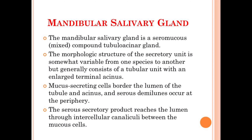Another characteristic of the mandibular salivary gland is that the lumen of the tubule and acinus is bordered by mucus-secreting cells, and the presence of serous demilunes can be marked at the periphery of these structures. The serous secretory product of the mandibular salivary gland reaches the lumen of different tubules with the help of intercellular canaliculi that occur between the mucus cells.